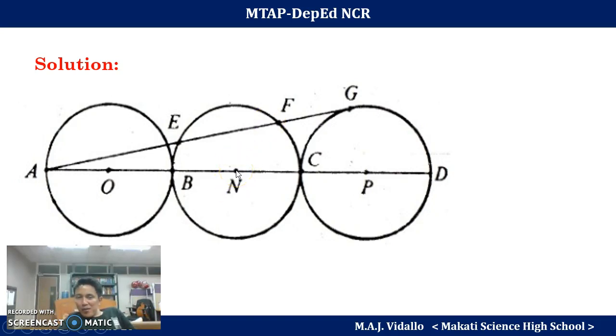we drop a perpendicular line from point N to EF and let's call the point of intersection as H. Doing the same, since AG is tangent to circle P, therefore PG is perpendicular to AG.